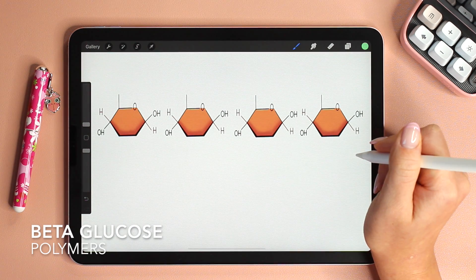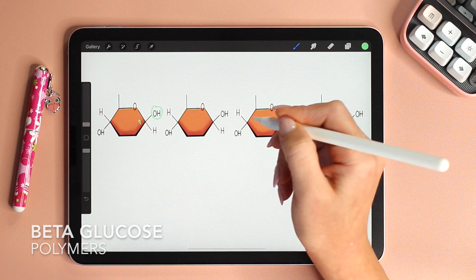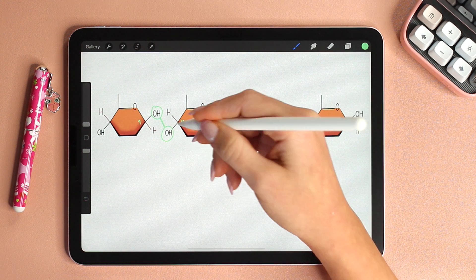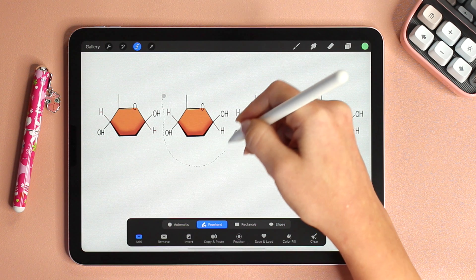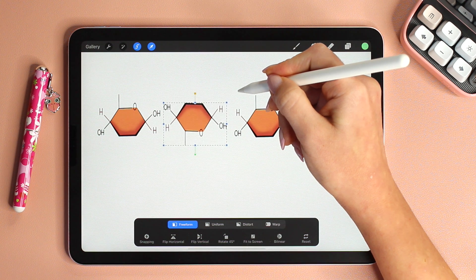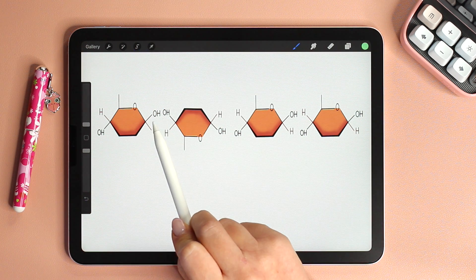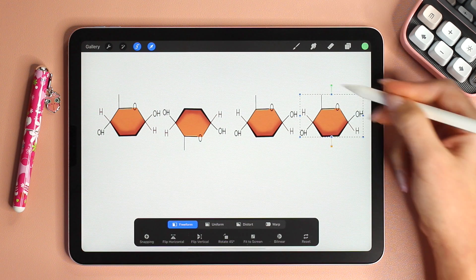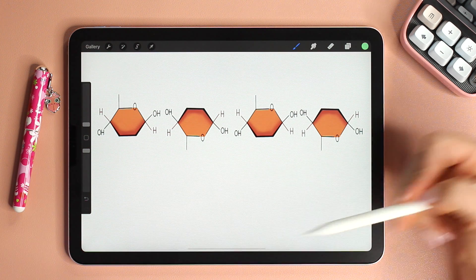What about polymers with beta glucose? In the case of beta glucose if you place them next to each other the hydroxyl group of carbon number 1 is not facing the hydroxyl group of the carbon number 4 on the next glucose molecule. For the formation of glycosidic bonds the two hydroxyl groups have to be facing each other. I'm going to select this glucose molecule and flip it vertically 180 degrees. And by doing that you can see that now the two hydroxyl groups are facing each other. And that's why in beta glucose polymers every other glucose molecule is rotated 180 degrees. Now that they are properly placed they condense and form cellulose.